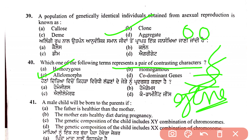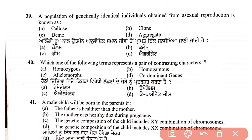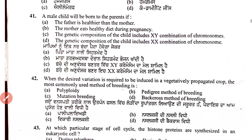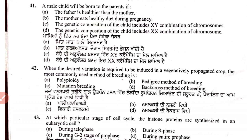Question 41: a male child will be born to parents if — options are father is healthier, mother eats healthy diet during pregnancy, genetic composition of child includes XY chromosome combination, or XX combination. The answer is C — the genetic composition includes XY chromosome combination.